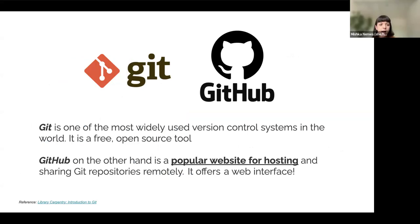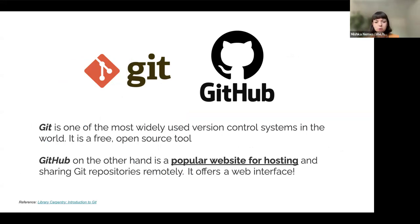To clarify the difference between Git and GitHub: Git is a version control system, the most widely used, and it is a free open source tool. GitHub is the hub of Git — it's the most popular website for hosting and sharing Git repositories remotely, and it offers a really nice web interface as well as an app. It's pretty user friendly to use.